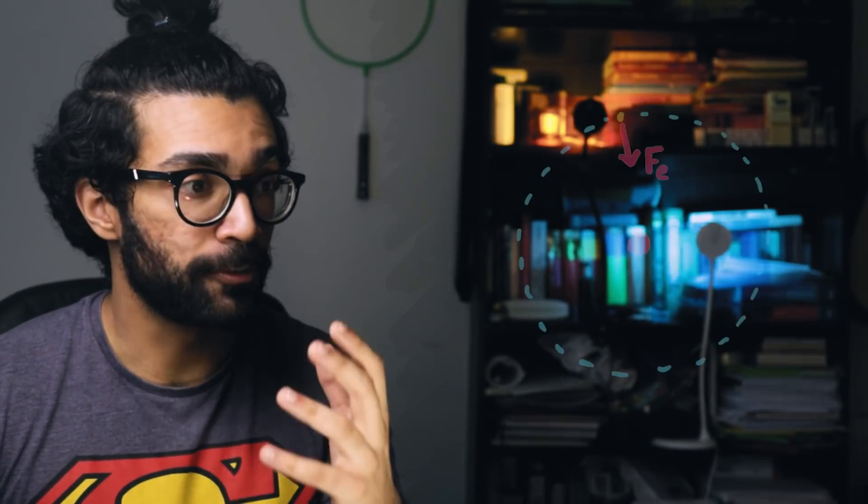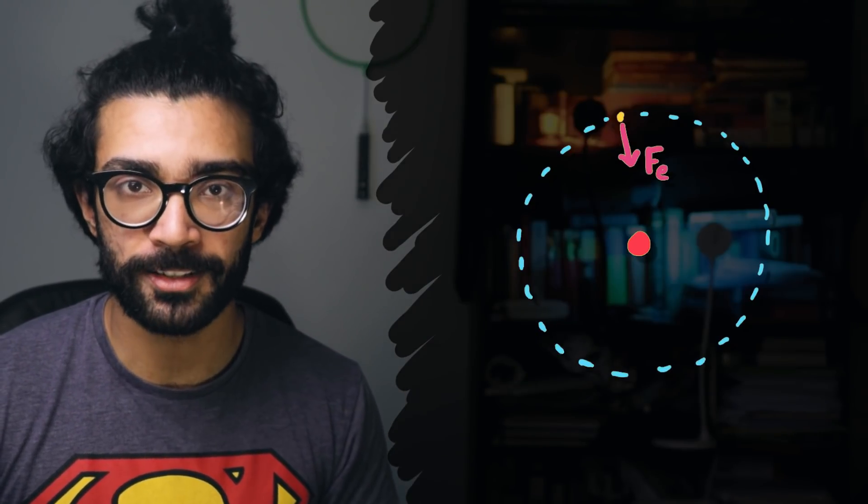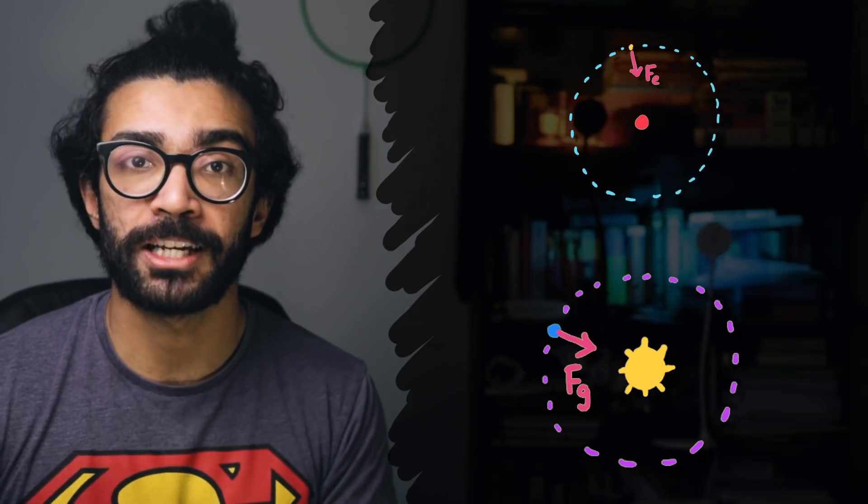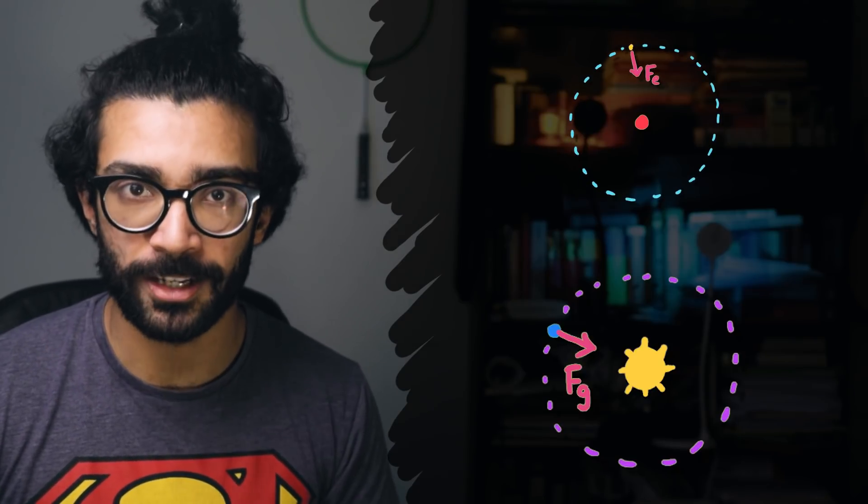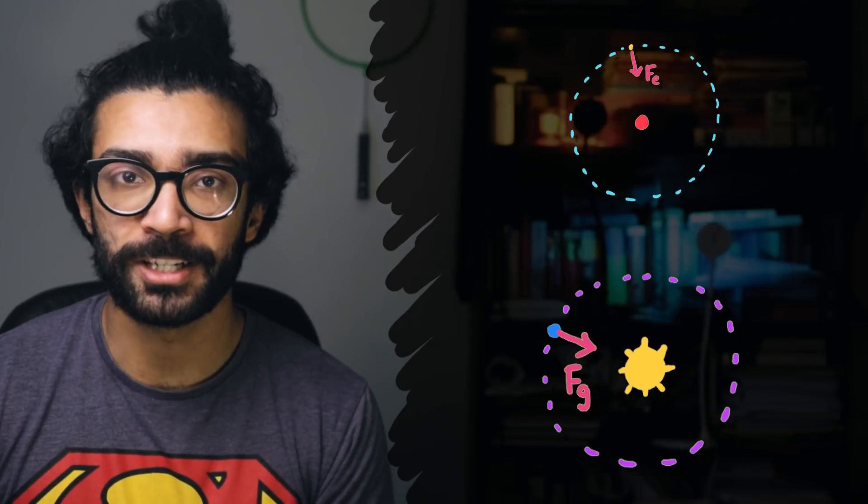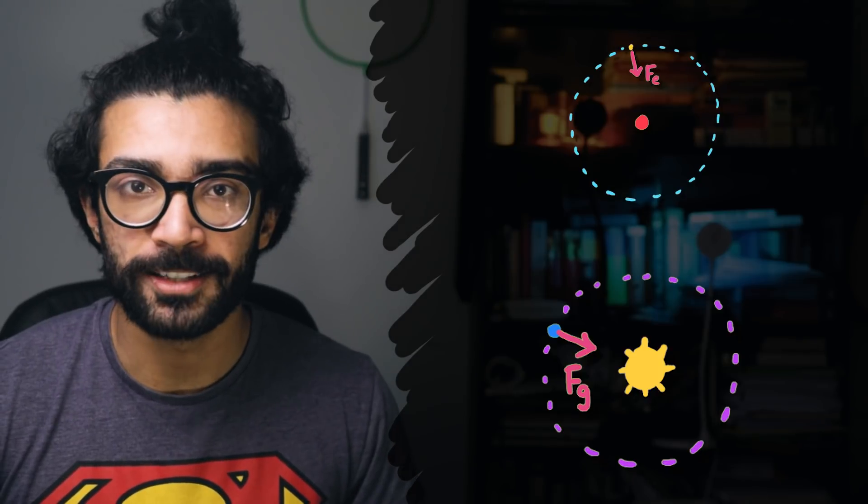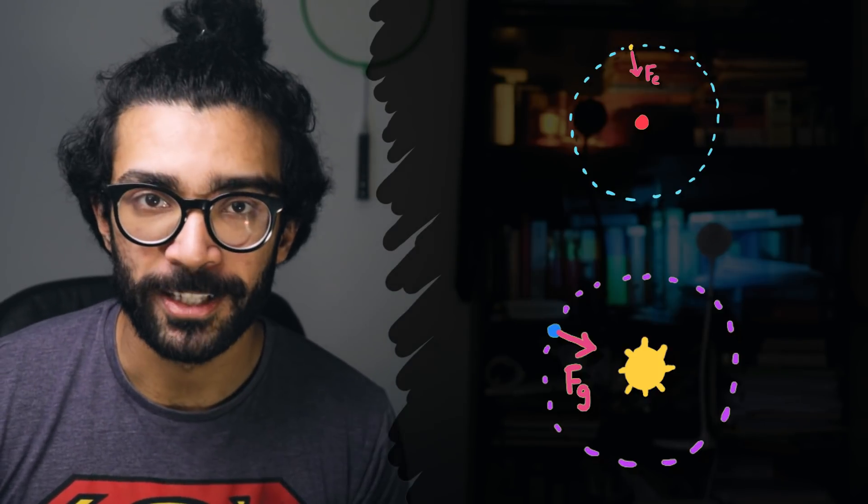The really pretty thing about the planetary model for the structure of the atom is that the force that's meant to keep these electrons orbiting around the nucleus behaves a lot like the gravitational force that keeps planets in orbit around the sun. Not only are we dealing with attractive forces that keep the smaller objects in orbit around the larger objects, but the forces in question can be expressed in very similar ways mathematically.